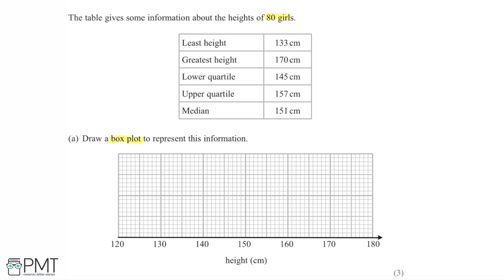The whiskers represent values that don't lie within the interquartile range — they extend out to the lowest and greatest heights to show the full range. Starting with the least height of 133 centimeters, I draw a line for the bottom tail. Similarly, for the greatest height at 170 centimeters, I draw in the other whisker. I'll draw all the vertical lines in first before connecting them, so I can clearly see the center box.